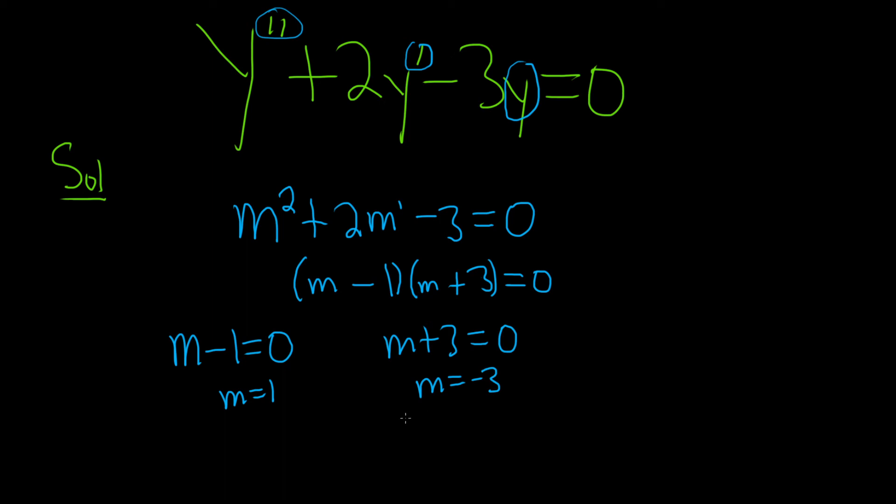So we have distinct real roots. So whenever you have distinct real roots in a problem like this, the solution is given by the following formula. It's big C sub one e to the m one x plus big C sub two e to the m two x, where m one and m two are your distinct real roots.